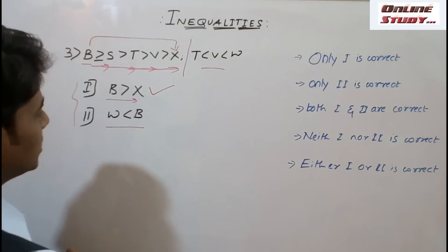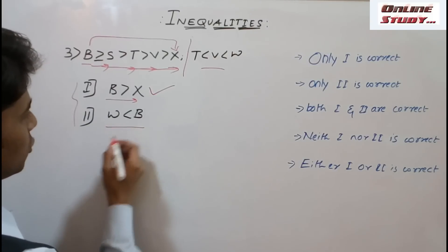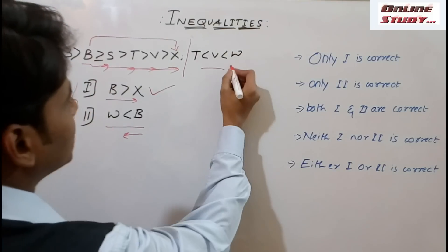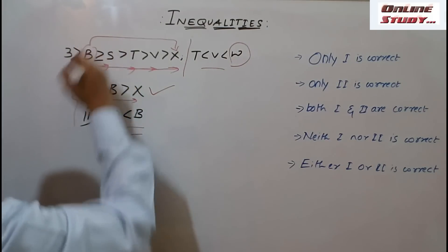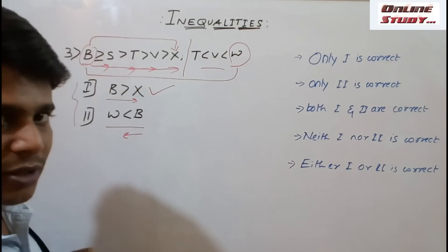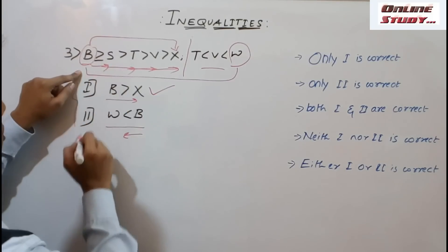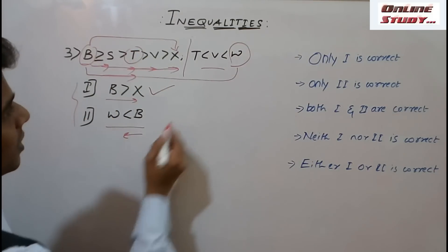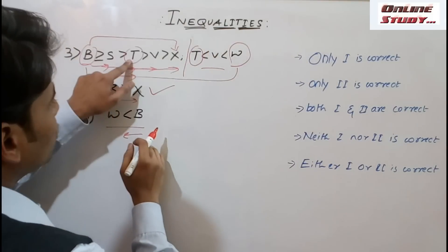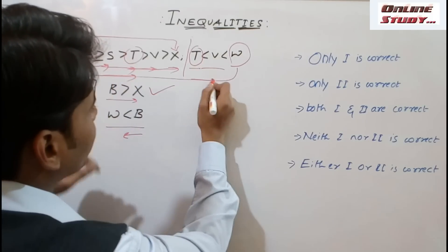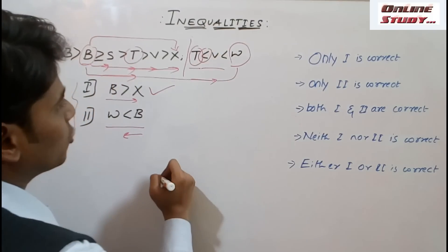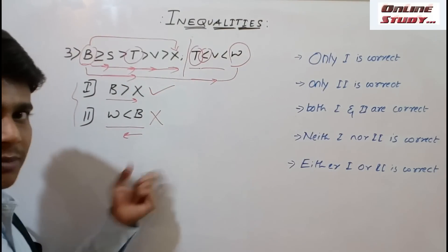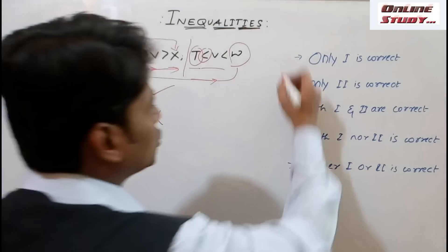Now conclusion 2: W is less than B — we try to move from B to W. B is here and W is here. From B to S, the gate is open — possible. From S to T, the gate is open — possible. But from T to V, it is not possible because the gate is closed. So we cannot travel from B to W. This conclusion fails. Therefore, only the first conclusion is correct.